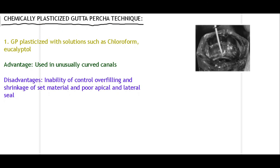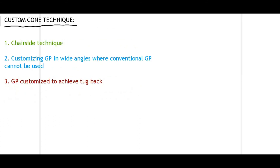Chemically plasticized gutta-percha technique: GP is plasticized using solutions such as chloroform — the GP softens when placed in the chloroform solution and is then placed into the canal spaces. Advantages include use in unusually curved canals as softened GP flows easily. However, disadvantages prohibit its clinical use: inability to control overfilling, risk of apical flow, shrinkage of set material, and poor apical and lateral seal. The last technique is the custom cone technique — a chairside method used to customize GP in wide canals where conventional GP cannot be used, to achieve tuck-back. This is a relatively rare technique.